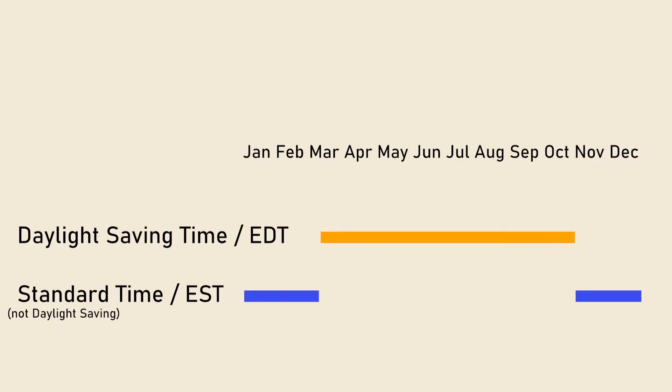Basically, EDT is used when it is Daylight Saving Time — Spring and Summer — and EST is used when it isn't Daylight Saving Time — Fall and Winter.